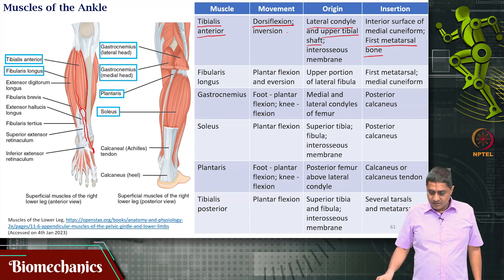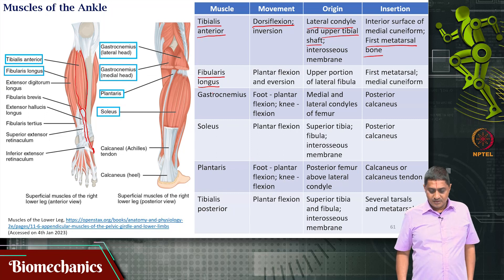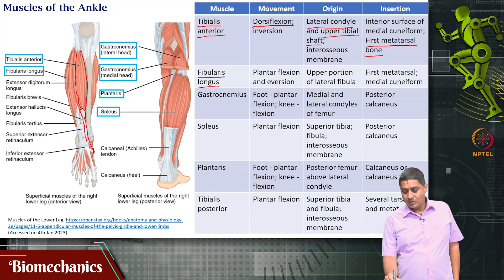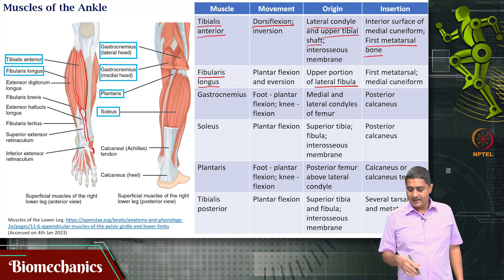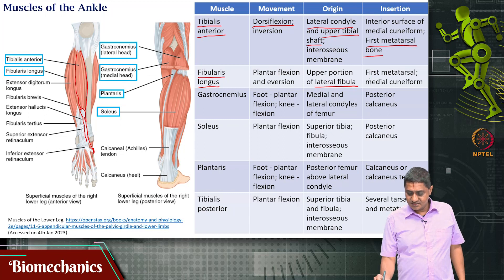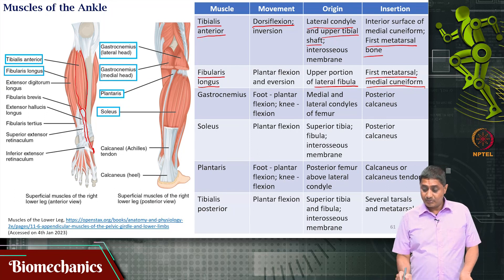Then you have fibularis longus. This originates at the fibula — you can tell from the name, which says fibularis, whereas the previous muscle said tibialis and originated at the tibia. Fibularis longus attaches to the first metatarsal and medial cuneiform, and is responsible for plantar flexion.